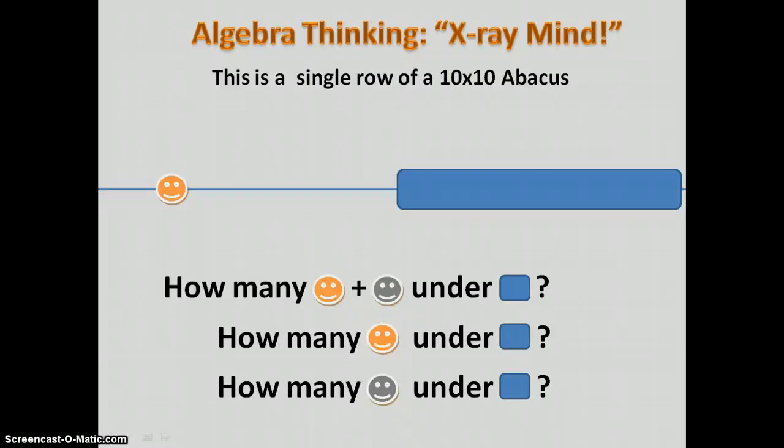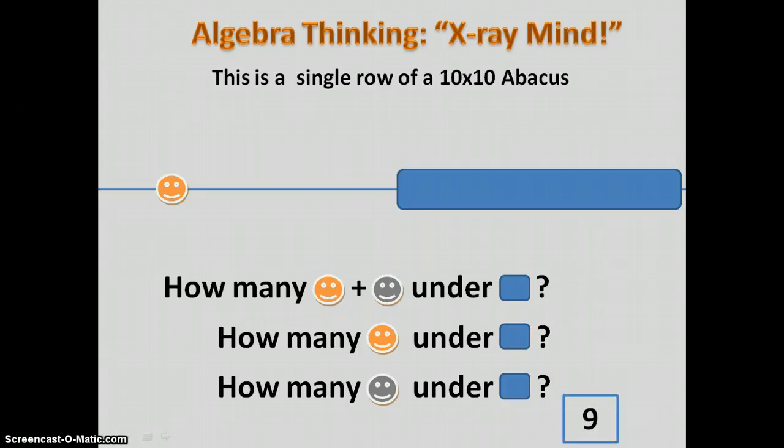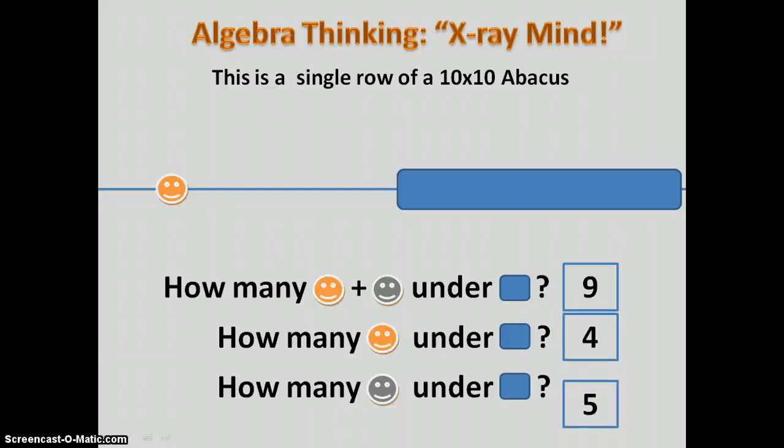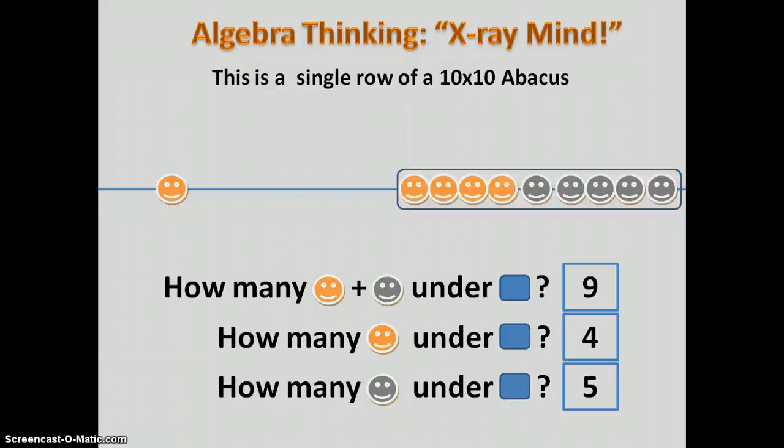That leads to another series. And again, this is really powerful. For instance, after they're practiced knowing that a single row contains ten, you begin to set up situations like this where you actually can physically cover up an area on your abacus. Or you can use this just as an activity. How many of those are under there? Use your X-ray mind, your thinking to discover what's under there. There's nine. There has to be four. And there has to be five. And then you visualize.